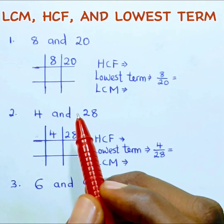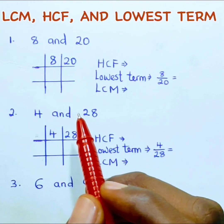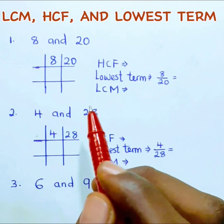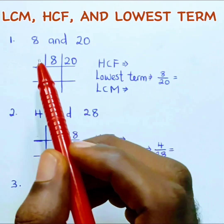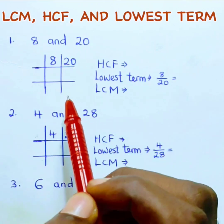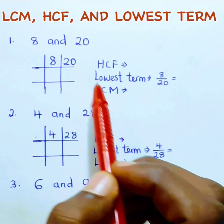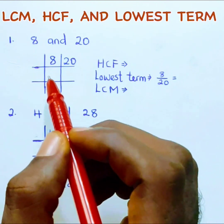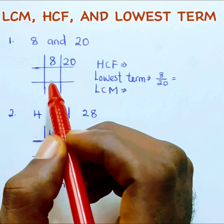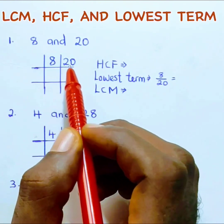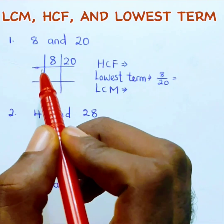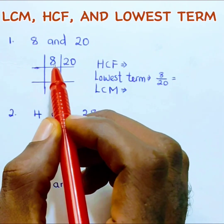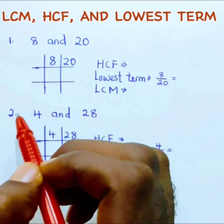This method helps you find the HCF, LCM, and lowest term all at once. Here we have 8 and 20. You begin by drawing your ladder and positioning the numbers correctly, then look for the smallest number that divides both 8 and 20.